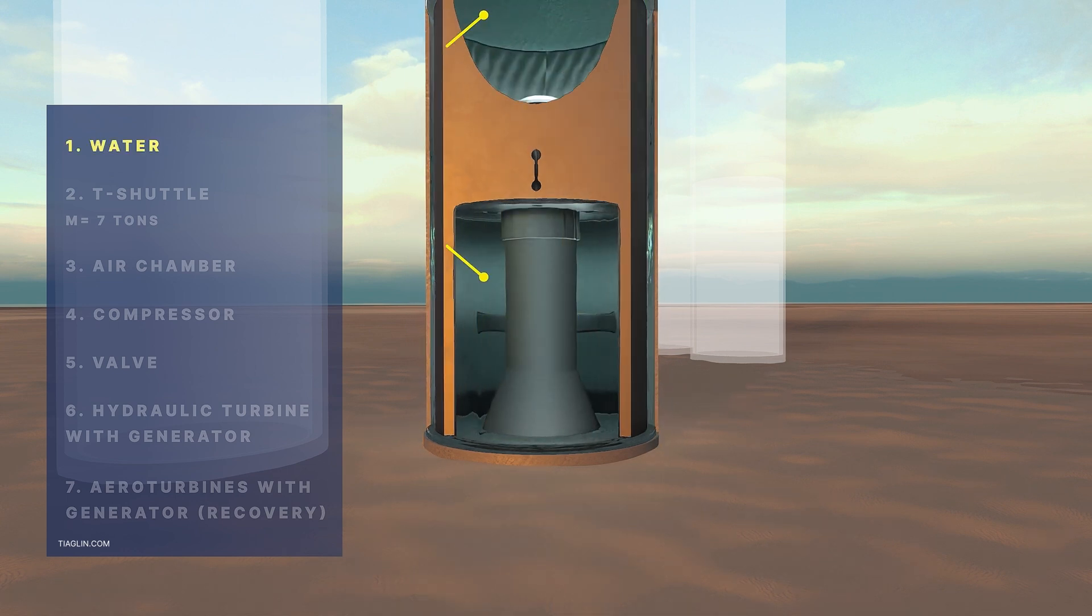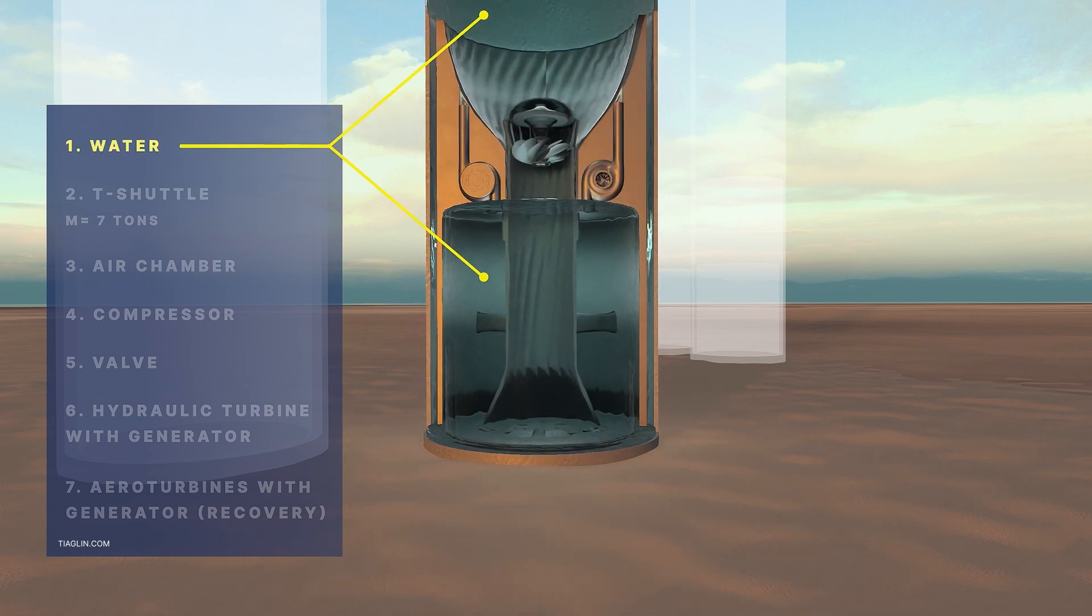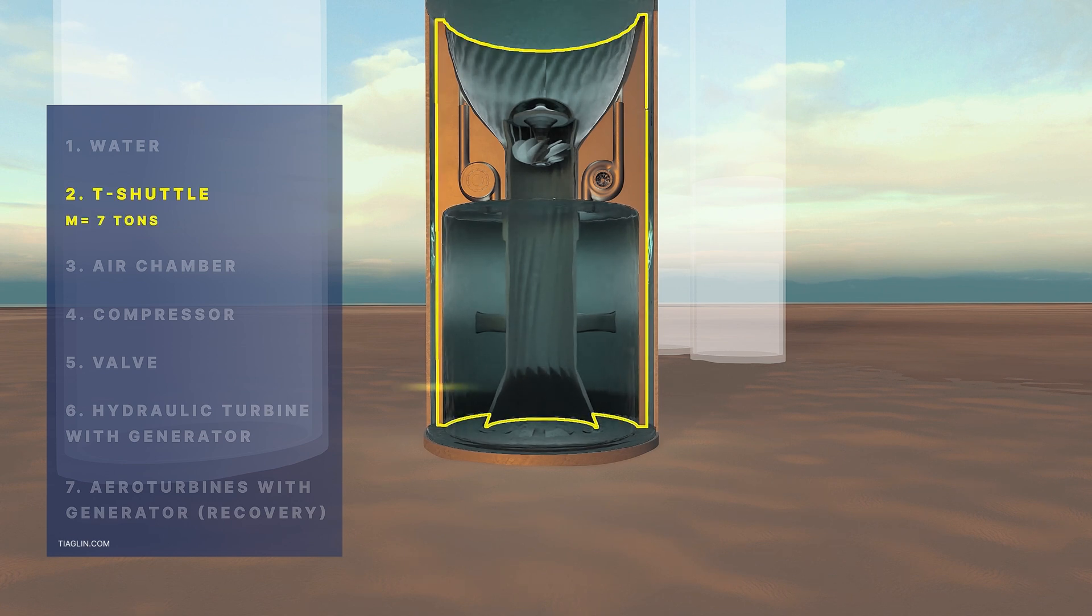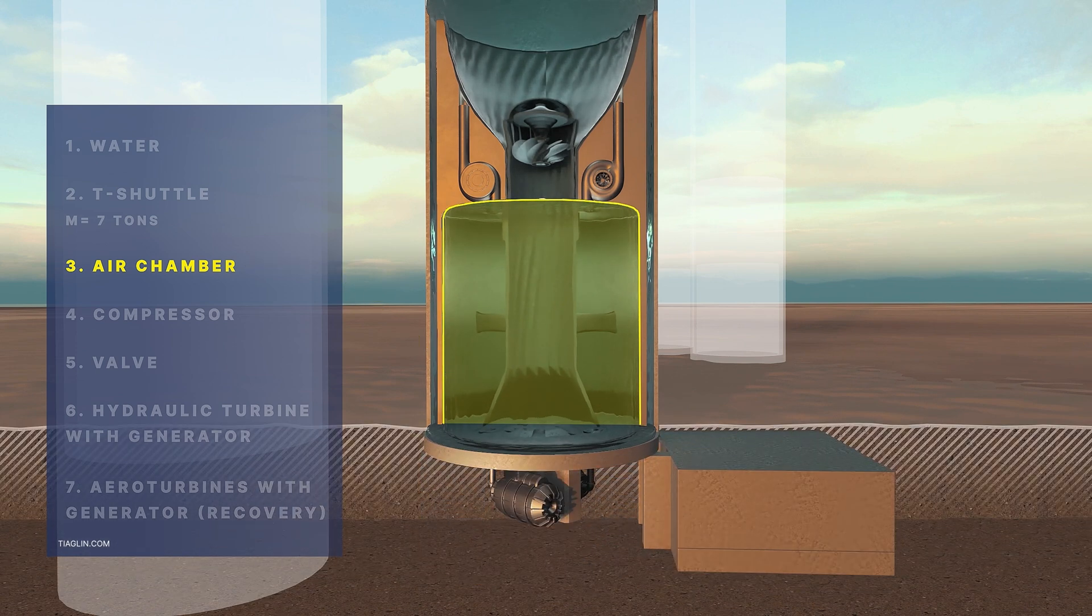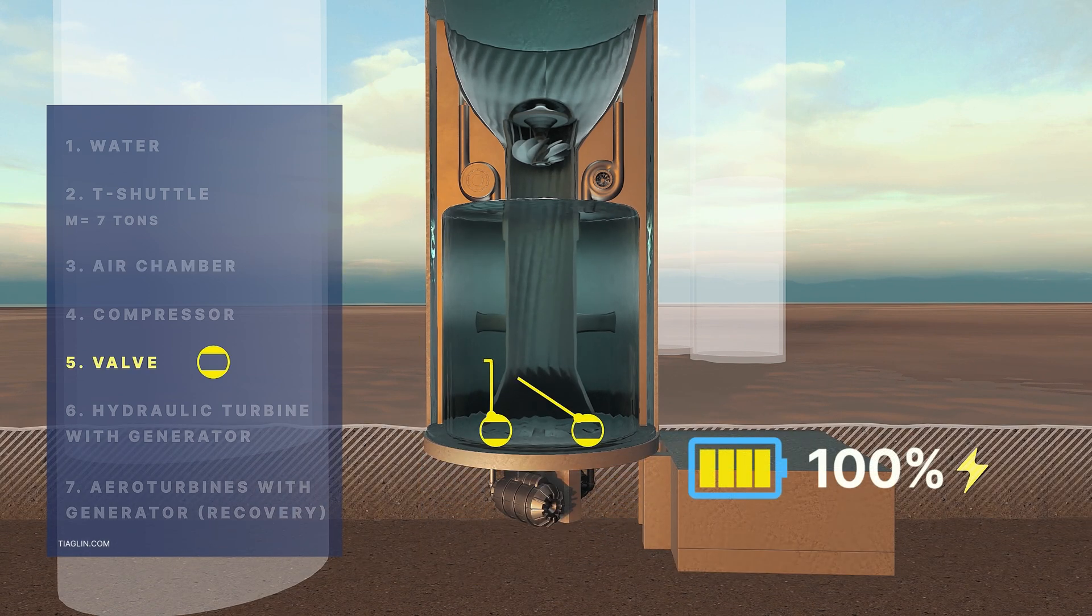The solution is a cylindrical body filled with water, in which a T-Shuttle with a turbine mounted on it is placed. The T-Shuttle is provided with means for giving it positive or negative buoyancy in the form of cavities filled alternately with air or water.